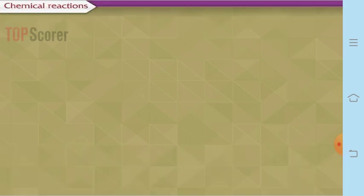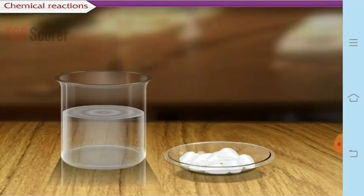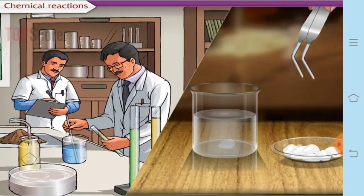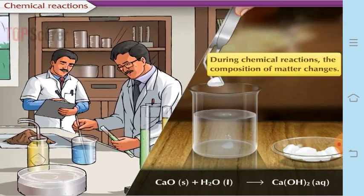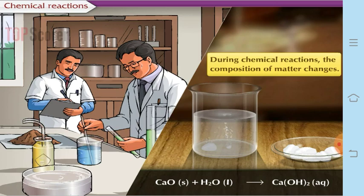Scientists in the 18th and 19th century carried out fundamental experiments on chemical reactions and proved that during chemical reactions the composition of matter changes. For example, calcium oxide when combined with water forms calcium hydroxide, and that change remains permanent.